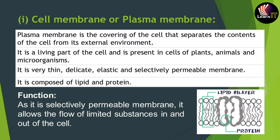Now we'll move to the first topic in the structure of the cell: the cell membrane or plasma membrane. The plasma membrane is the covering of the cell that separates the contents inside the cell from the external environment. It keeps safe all the things present in the cell. It is the living part of the cell, present in plant cells, animal cells, and microorganisms. It is very thin, delicate, elastic, and selectively permeable.